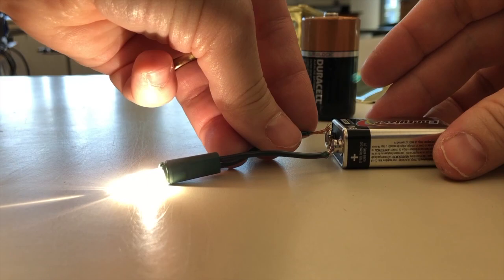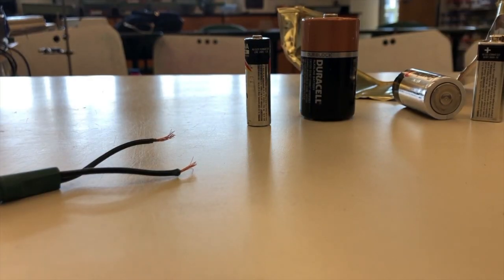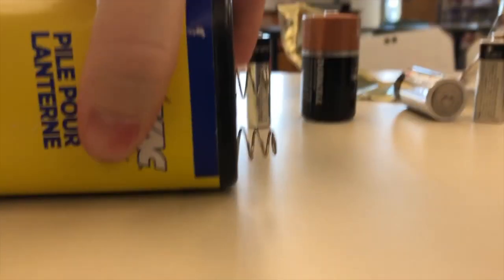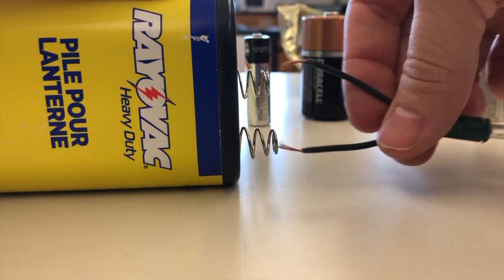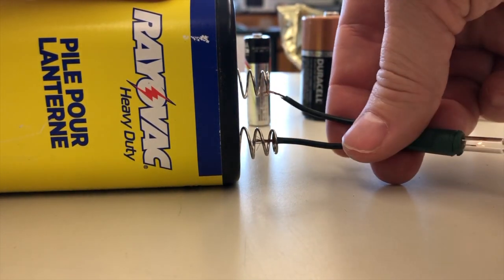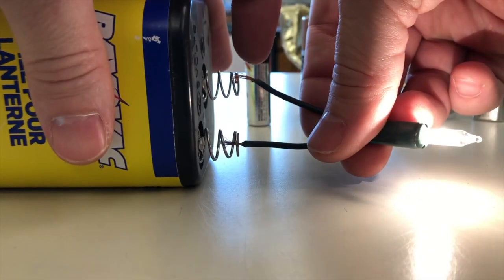Now we can also light the bulb with the lantern battery. Six volts still makes the light very bright, but the huge volume of the F cells means the light will be on for almost a whole day.